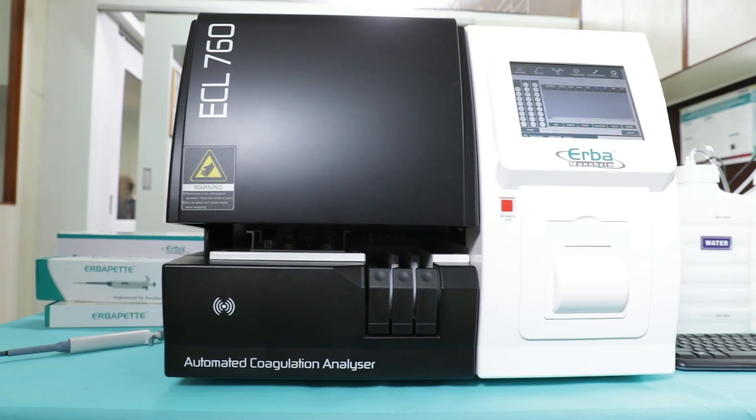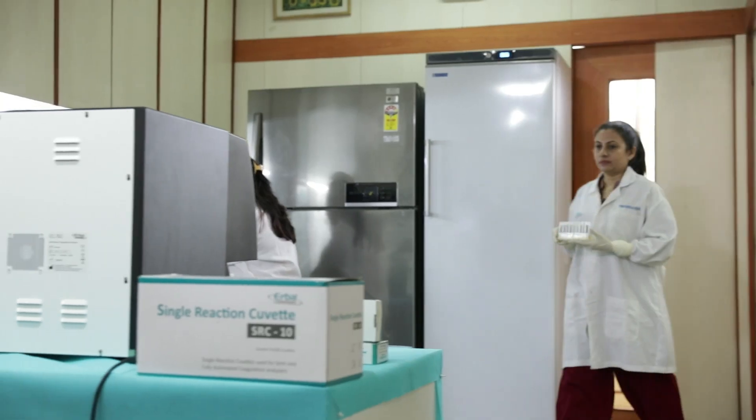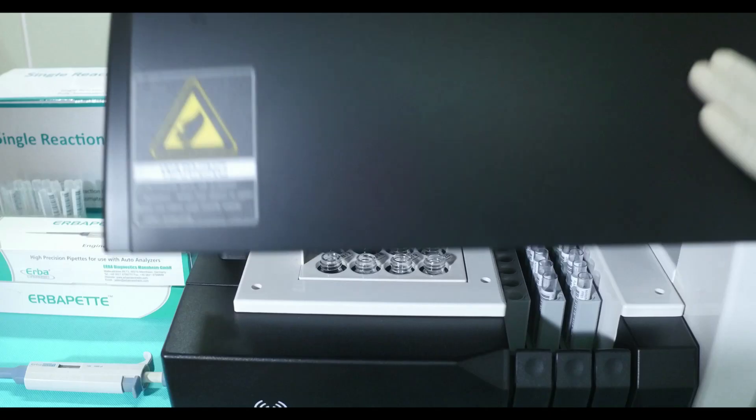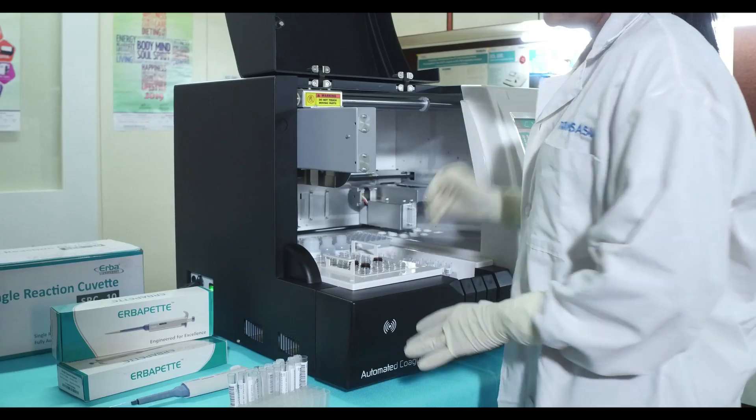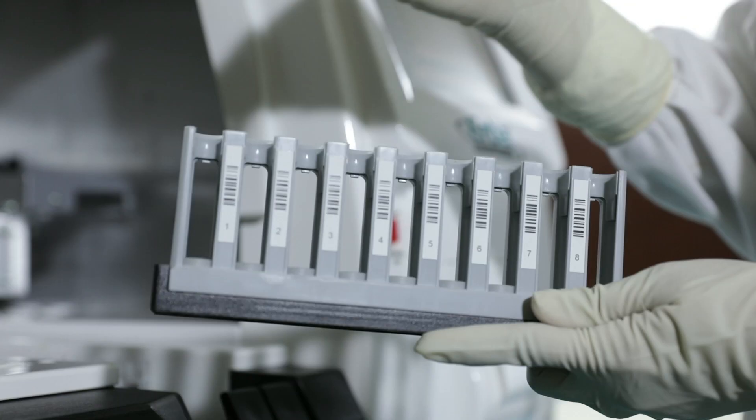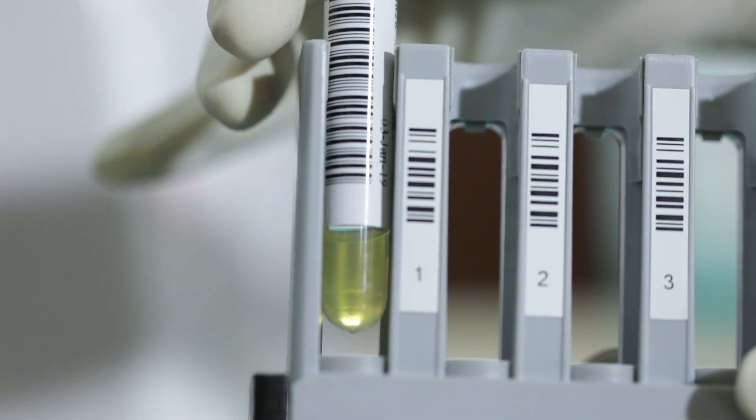ECL760 is a seven measuring channels analyzer and can perform 60 PT per hour. A compact instrument with small footprint, integrated PC with touchscreen and thermal printer makes it an ideal, fully automated choice for mid-range workloads.